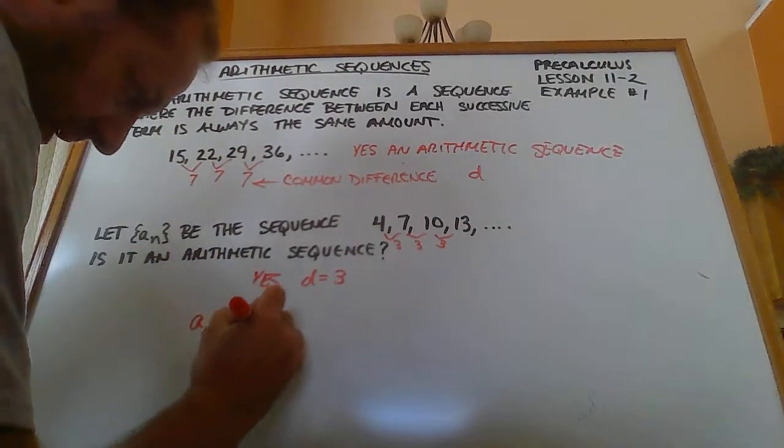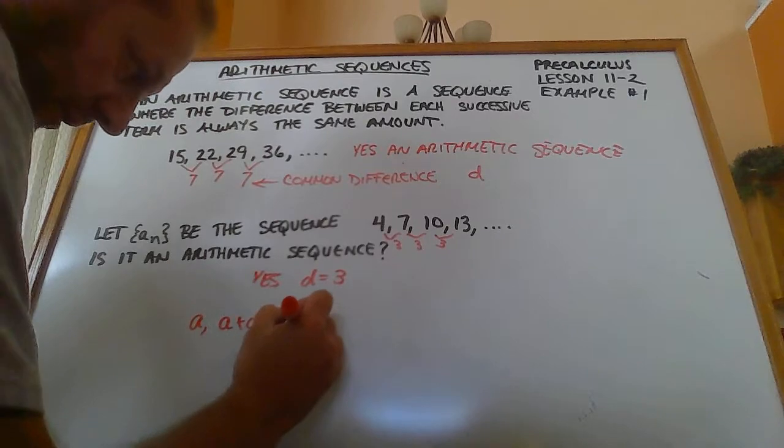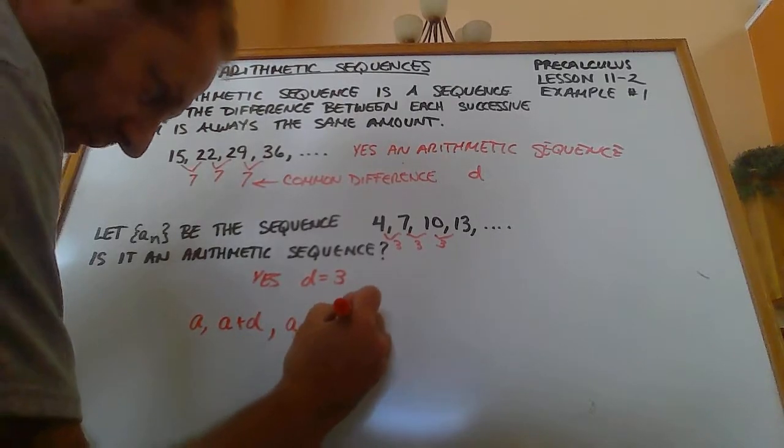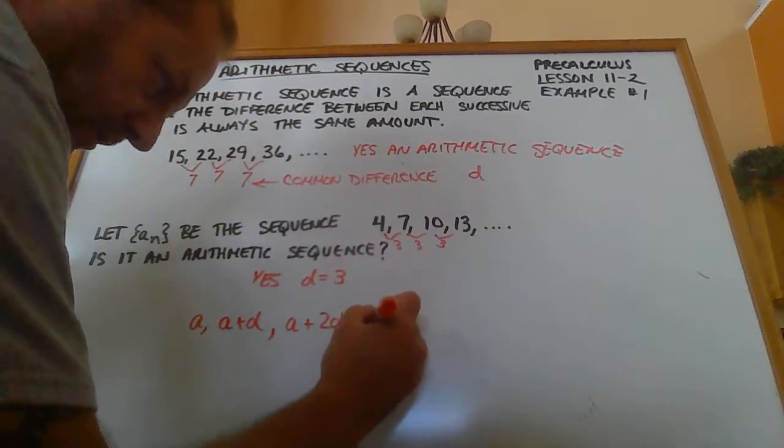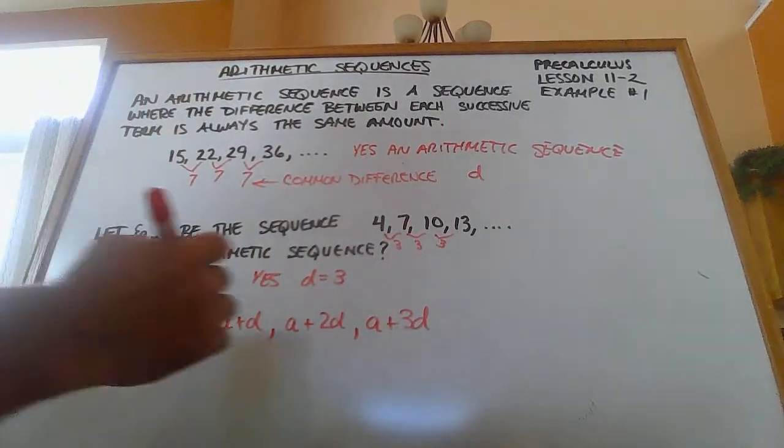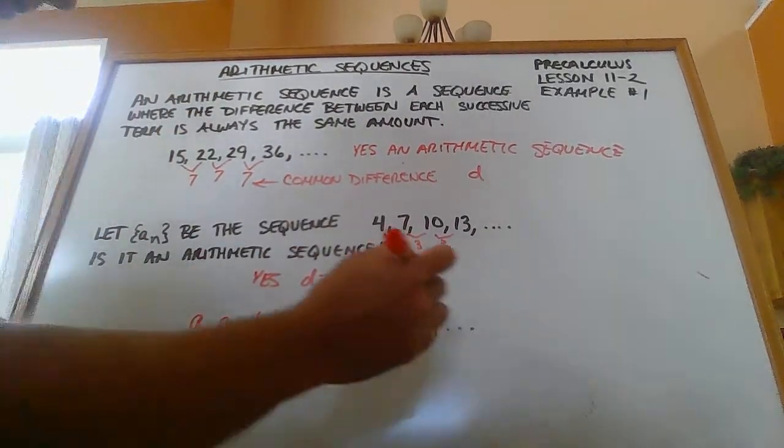And then the second term is A plus D, and the third term is A plus 2D, and the fourth term is A plus 3D, and so on and so forth forever.